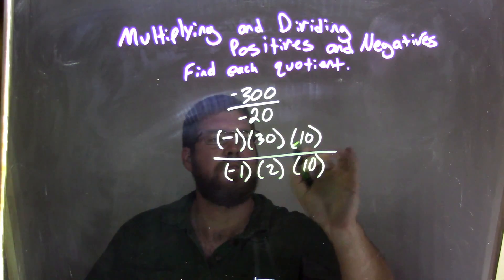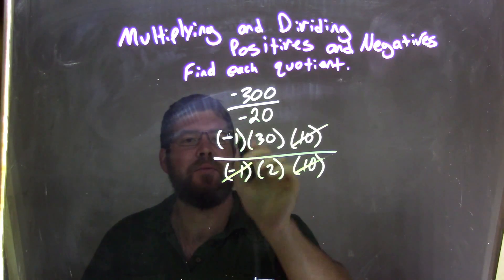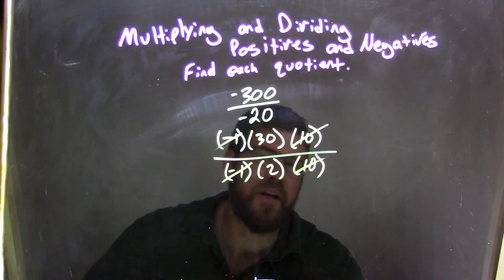Well, the tens, numerator and denominator, we can cancel, the negative ones we can cancel out, and now we have 30 divided by 2.